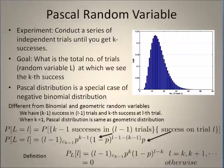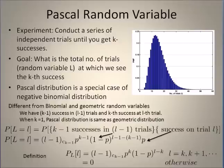Let us look at the definition of the Pascal random variable. The experiment is to conduct a series of independent trials until you get the kth success — that is, until you have k successes, you will continue the experiments. The goal is to see what is the total number of trials at which we see the kth success, so we stop when we see the kth success. The random variable is the number of trials, denoted capital L, and we stop the experiment when capital L equals small l at which we have the kth success. Pascal distribution is a special case of the negative binomial distribution.